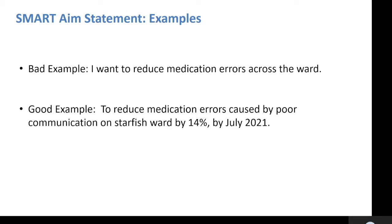Here's a couple of examples. A bad example of a SMART AIM might be: I want to reduce medication errors across the ward. This is very vague and doesn't even include an end date for the project. However, a much better example is: to reduce medication errors caused by poor communication on Starfish ward by 14% by July 2021.